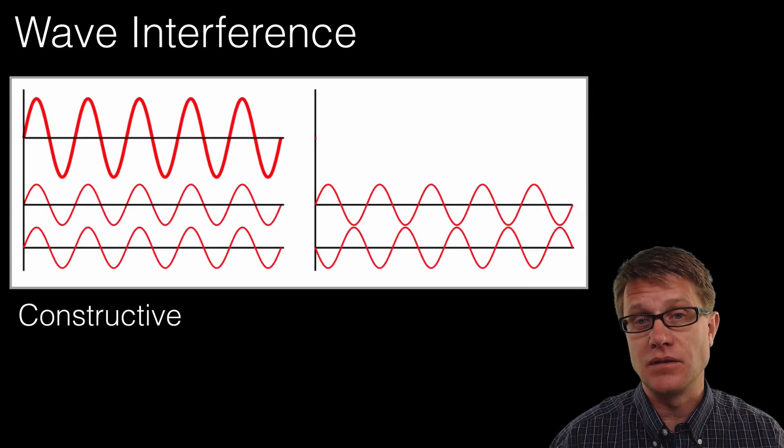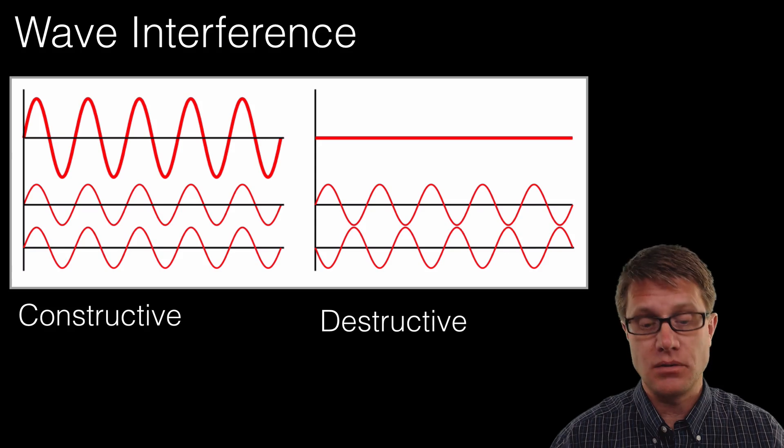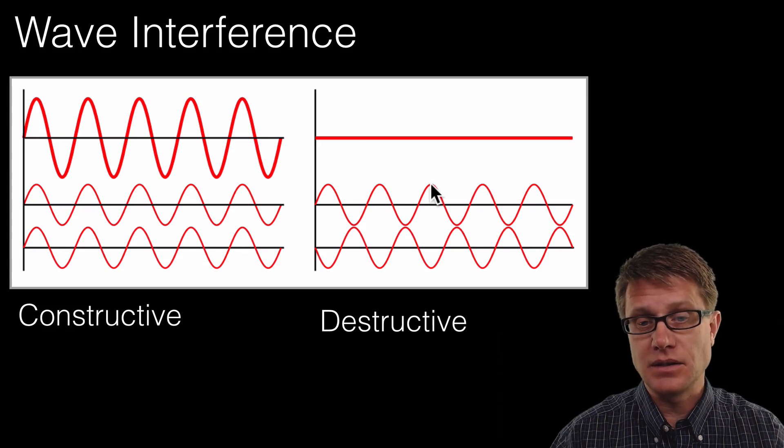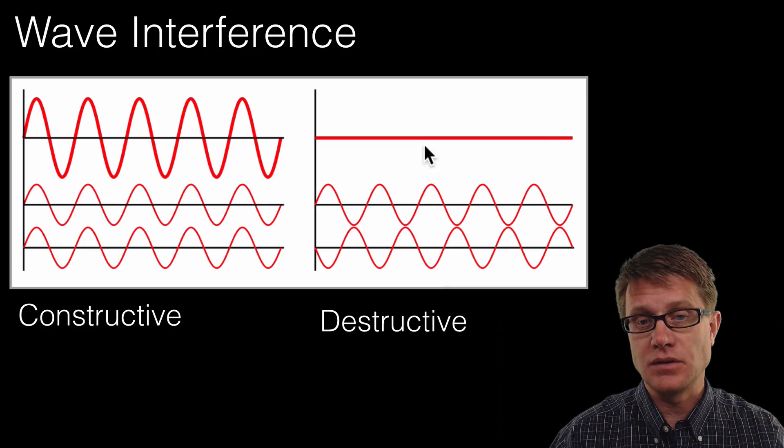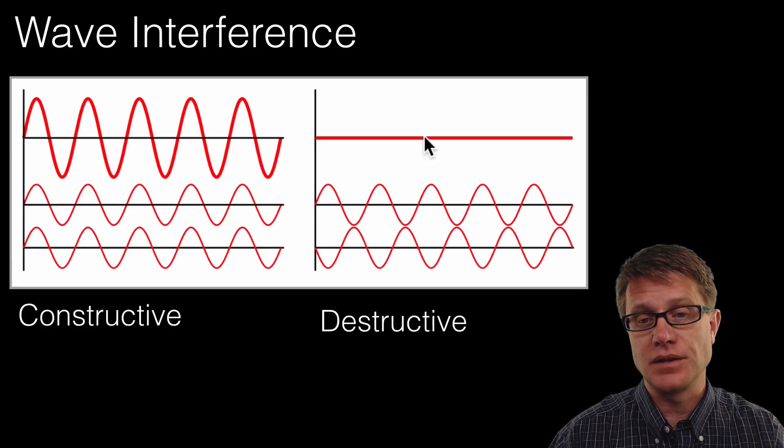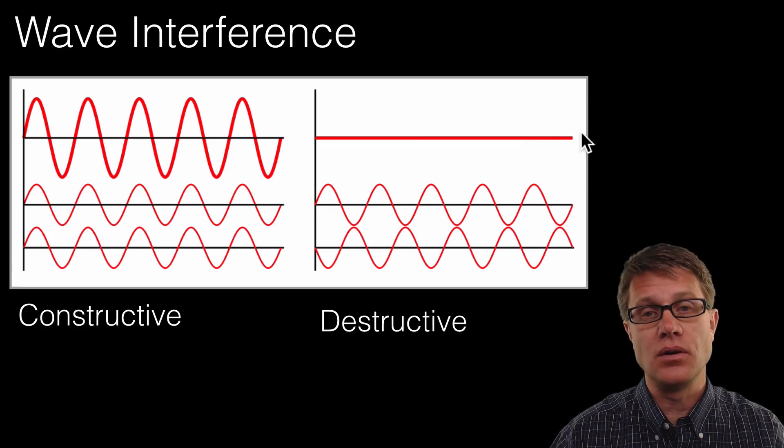Now we can also have destructive interference. And that is when it cancels each other out. So let's look at that. This one let's say is at one centimeter. This one right here is at negative one centimeter. And so what is the destructive interference? It is at zero. In fact it is at zero all the way across.